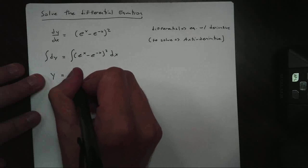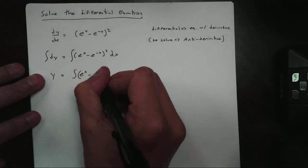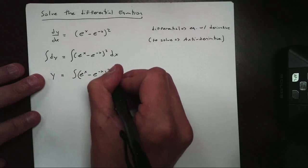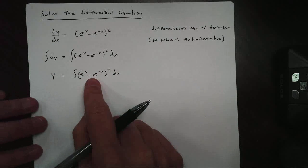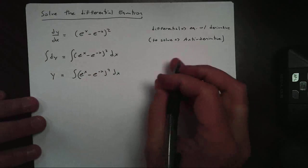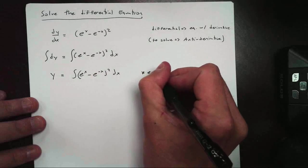This is going to equal the antiderivative of e to the x minus e to the negative x squared dx. Now you can try to use substitution here. It will fail. It won't work. So what we're going to do is an old algebra trick.